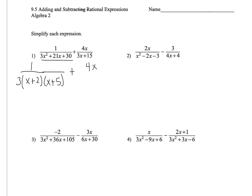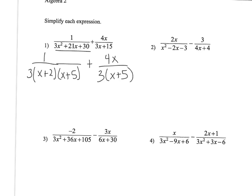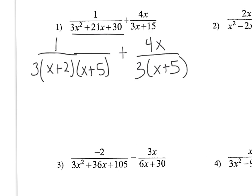Plus 4x times, and now I'm going to factor out the denominator, so it's 3 times x plus 5. So if you look right here, you have your denominator is going to be 3 times x plus 2 times x plus 5, and over here is 3 times x plus 5.